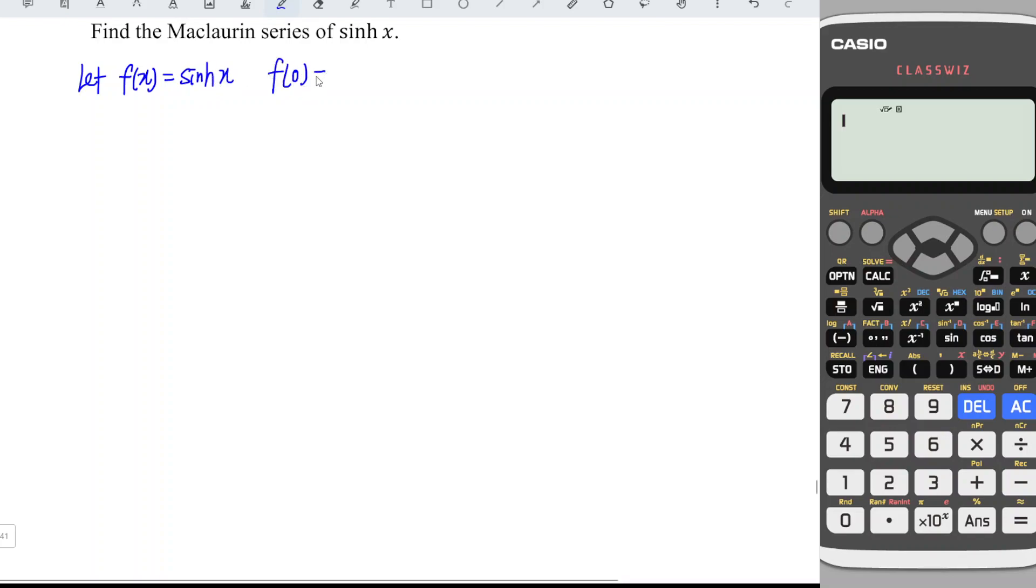At point 0 is equal to... we can make use of a calculator. So press option, look for hyperbolic function. What we want is hyperbolic sine, which is equal to 0.